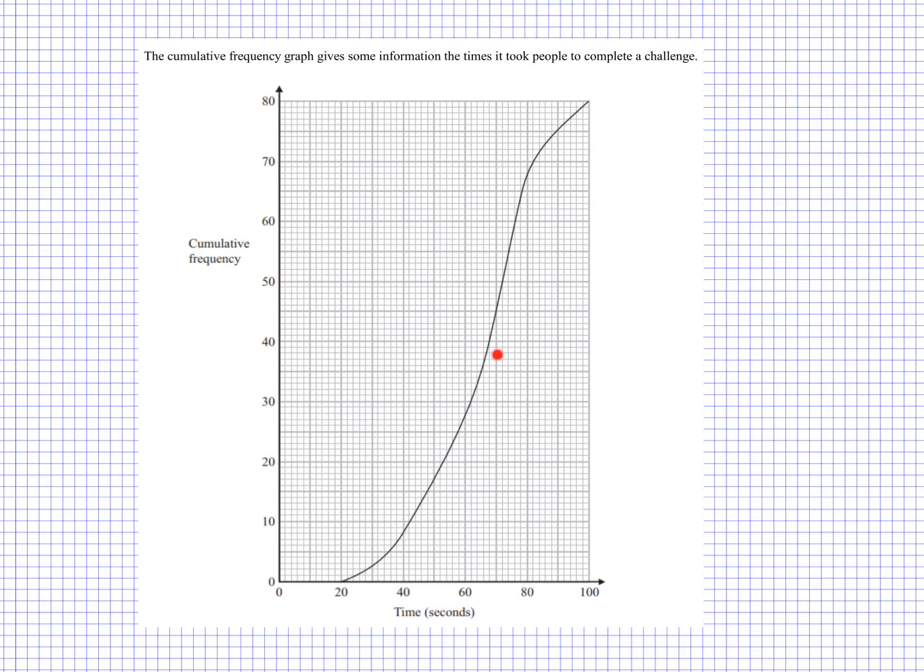When we have a cumulative frequency graph like this, there's a number of things that we can work out. Those that you will be already familiar with are the median, the upper quartile, lower quartile, and then the interquartile range using the upper quartile and lower quartiles.